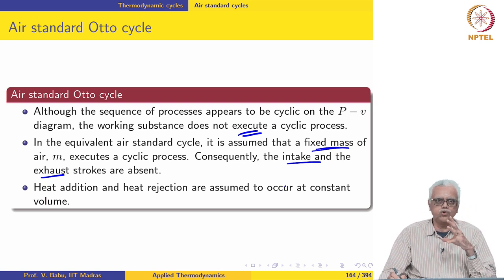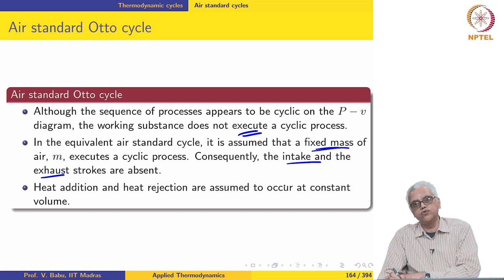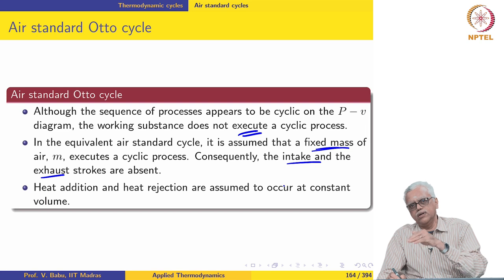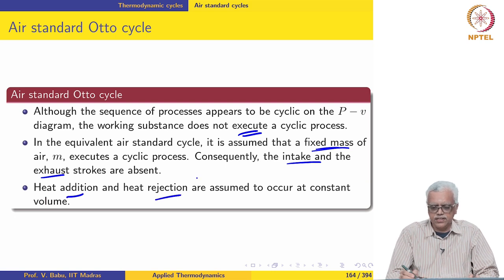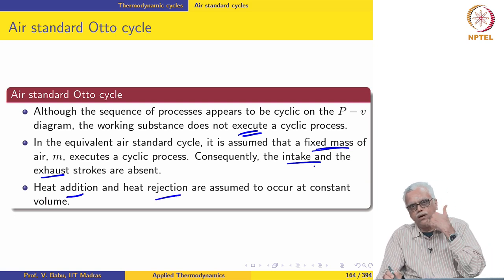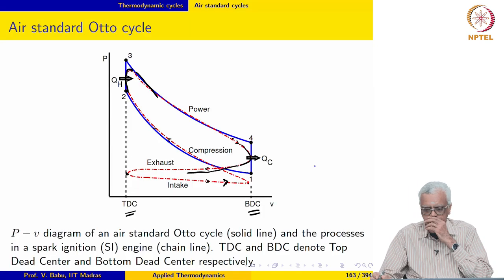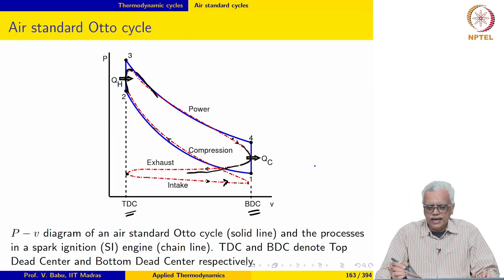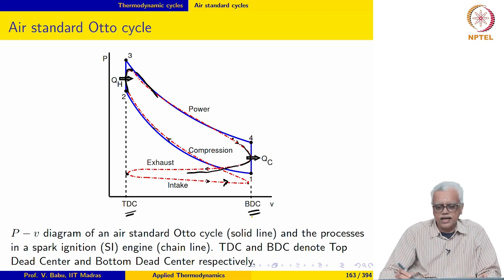We have illustrated a four-stroke engine. The equivalent idealized air standard Otto cycle executes only two strokes. Heat addition and heat rejection during the air standard cycle are assumed to take place at constant volume, as illustrated in blue in this diagram.